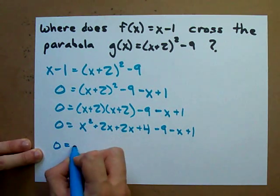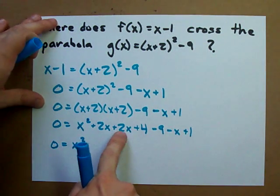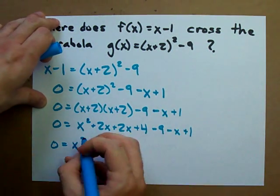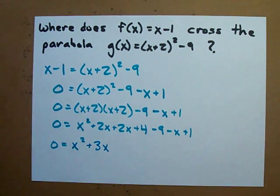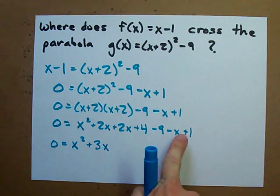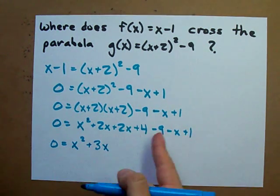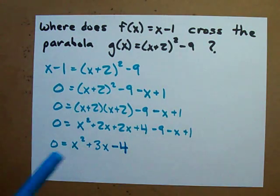I only have 1 x squared here. In terms of just x's, I have 2x plus 2x minus x. That's plus 3x. And in terms of just bare numbers, I have plus 4, minus 9, plus 1. I think that turns out to be minus 4. And that looks much cleaner.